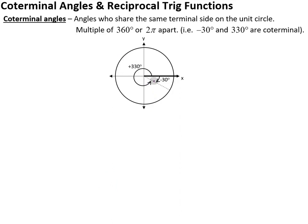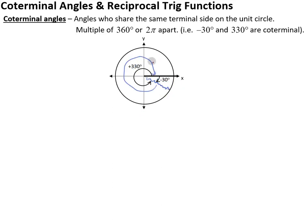Now if I wanted to find another angle that's co-terminal to both of these, we could actually go around the circle one more time. I could add an additional 360 degrees, which would make 690 degrees also co-terminal to both of those angles. Or likewise, we could go 360 in the negative direction, which would be negative 390, also co-terminal. You could just keep making laps around over and over again — there's technically an infinite number of co-terminal angles.